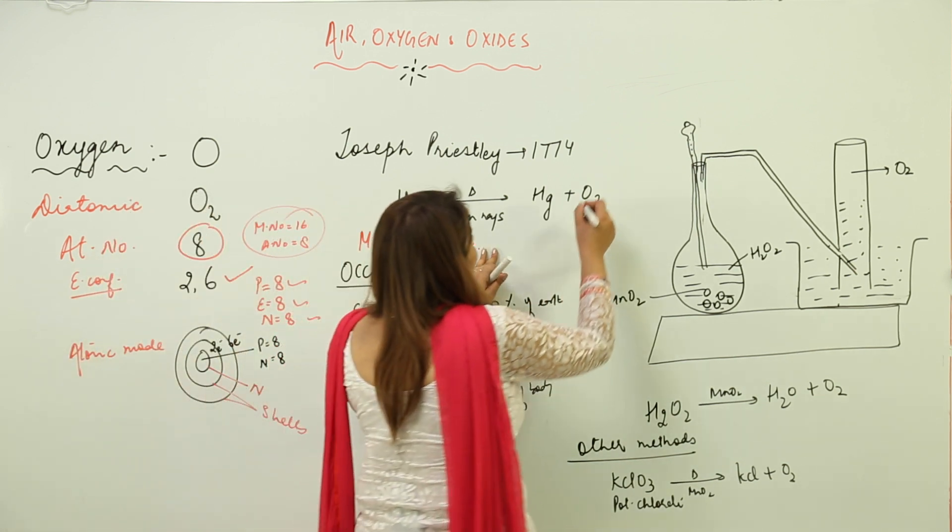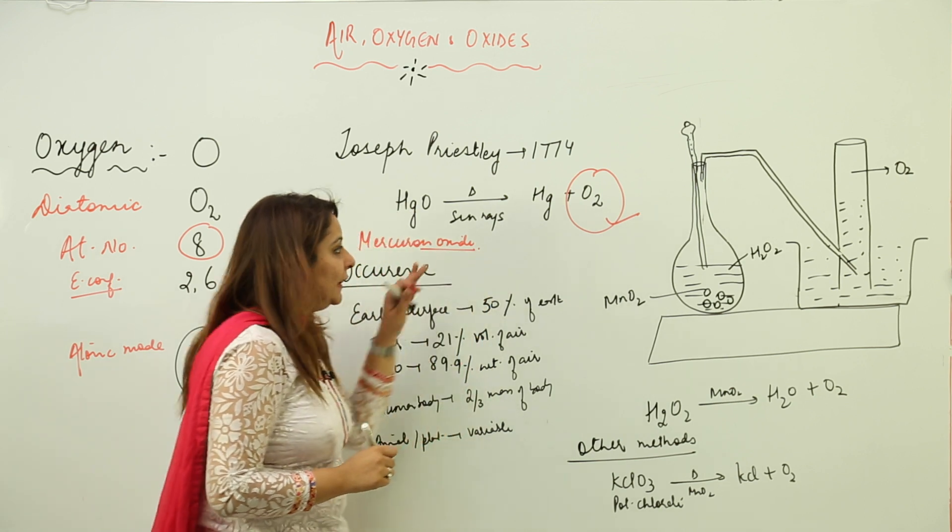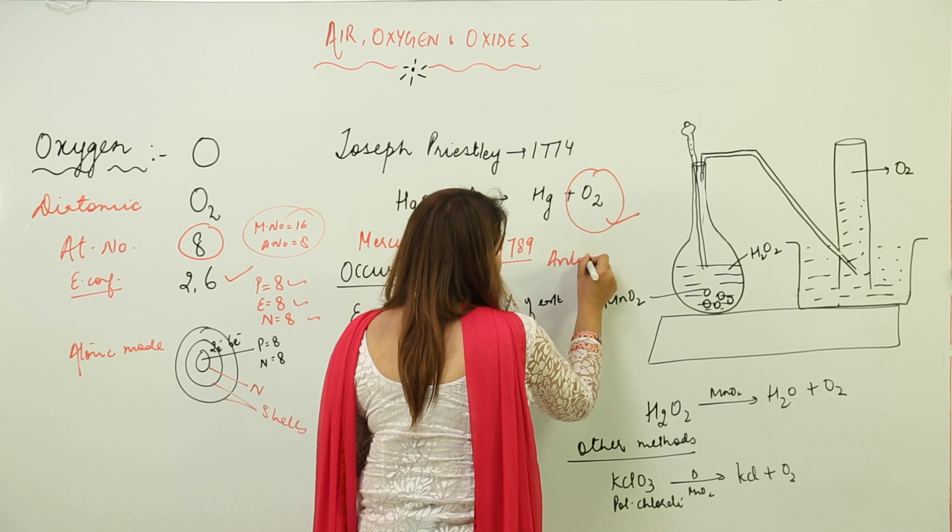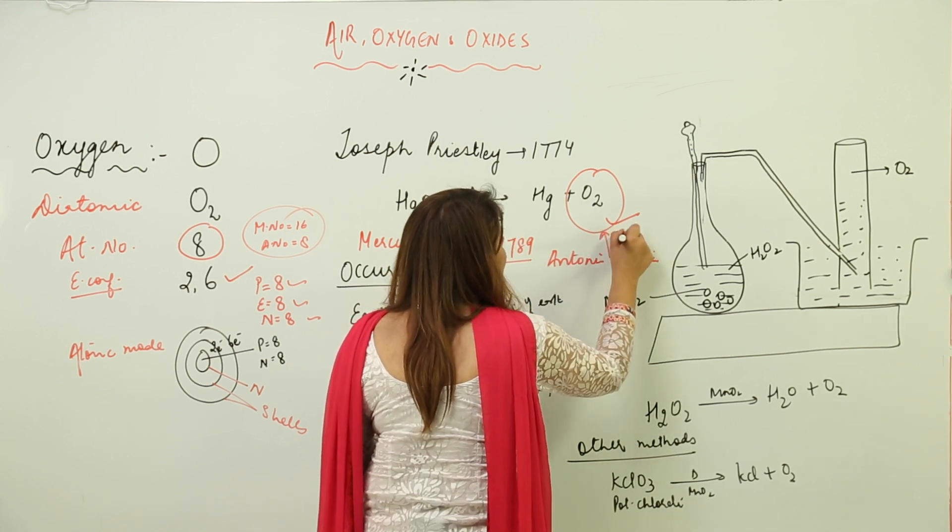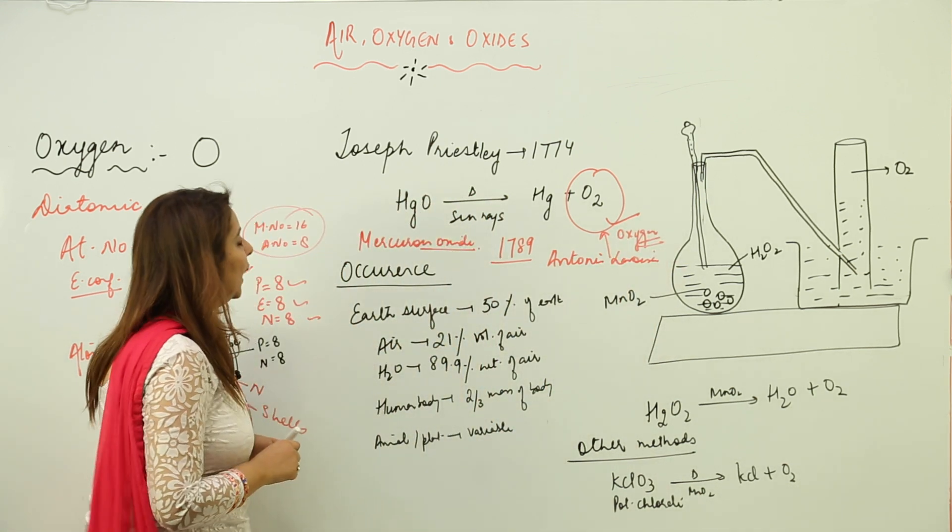He carried out the decomposition of mercuric oxide in presence of sun rays, and it leads to the formation of a new kind of gas, that is O2. And then in 1789, there was a scientist, Antoine Lavoisier, who named this gas as oxygen.